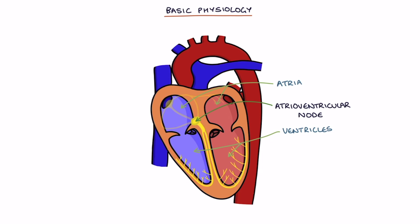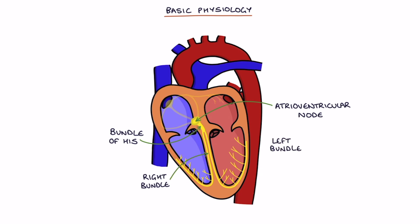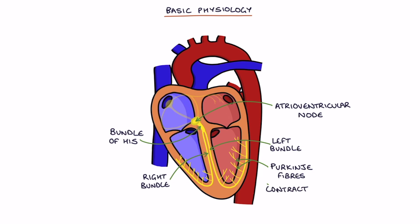It passes from the AV node to the bundle of His, which splits into the right bundle taking the signal to the right ventricle and the left bundle taking the signal to the left ventricle. From here it passes to the Purkinje fibers, which take the electrical signal throughout the ventricles causing them to contract. The right ventricle pumps blood to the pulmonary arteries and lungs, and the left ventricle pumps blood into the aorta and to the body.